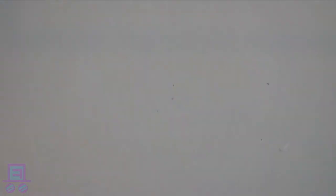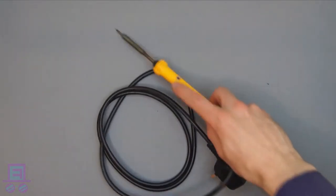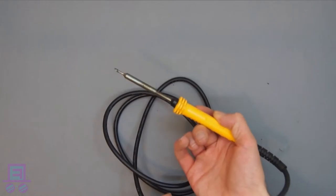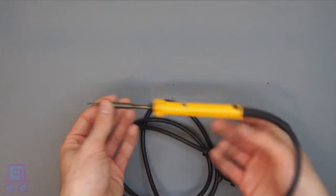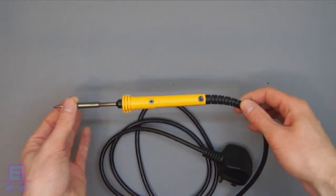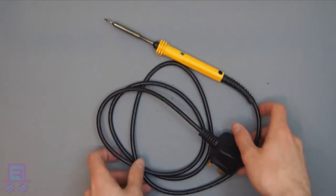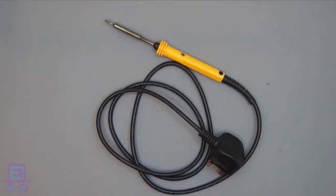When it comes to soldering irons, even the cheap stuff will get the job done. These can be as cheap as $10. I would say spend what you're comfortable with. If you think you're going to be doing more soldering in the future, I would highly recommend a soldering starter kit, which comes with loads of useful goodies.